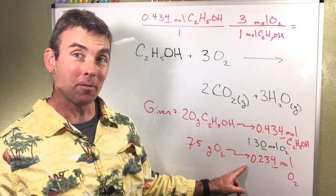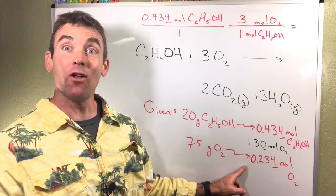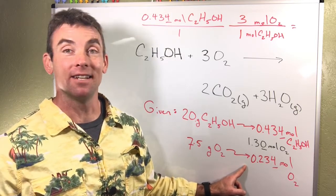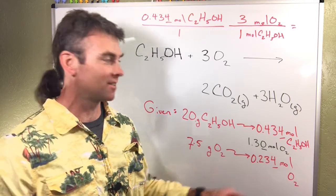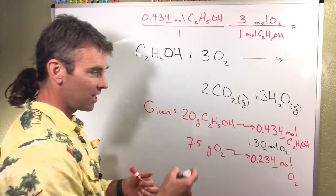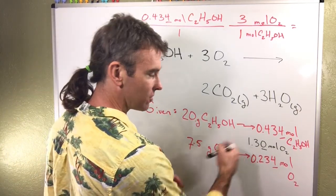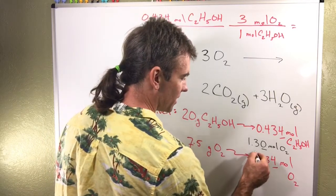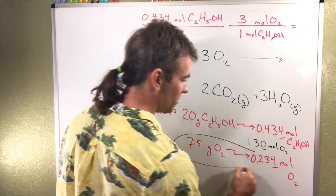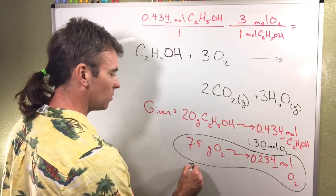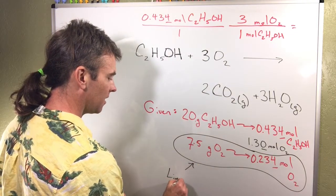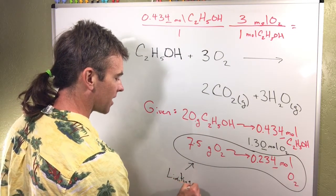We can determine which will limit the total amount of product I can form and which reactants are in excess. Because that requires so much more, O2 in this case is the limiting reactant.